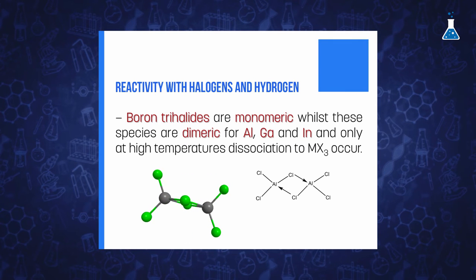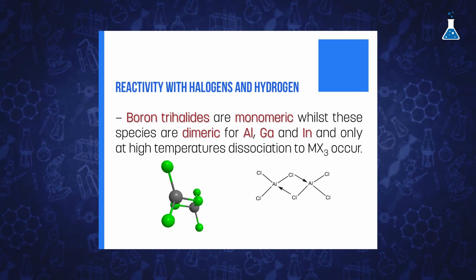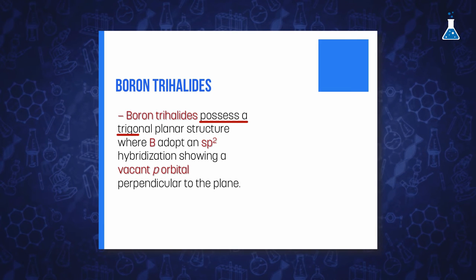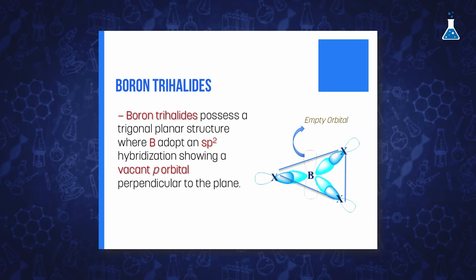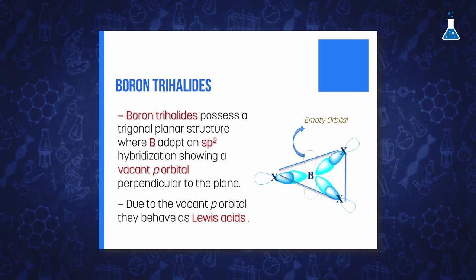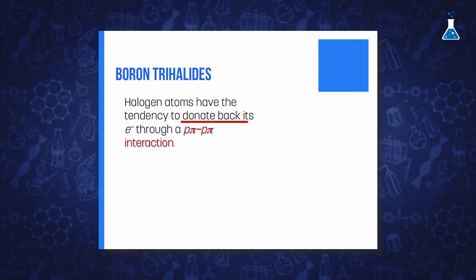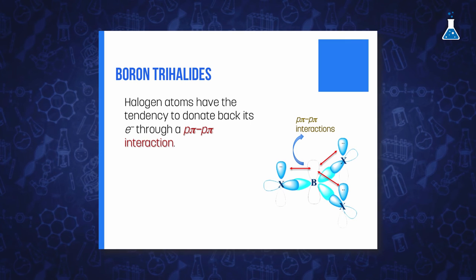Interestingly, boron trihalides are found as monomers, while these species are dimers for aluminum, gallium, and indium, due to their larger size which allows coordination of a 4th halogen atom. The monomeric boron trihalides possess a trigonal planar structure where boron adopts an sp² hybridization and has a vacant p orbital perpendicular to the plane. This empty orbital is the reason why they behave as Lewis acids, accepting pairs of electrons from Lewis bases. The power to accept the lone pair is contrary to that expected on the basis of the electronegativities of the halogens.